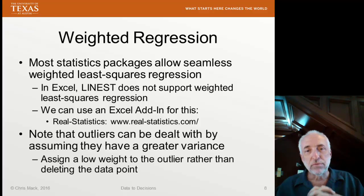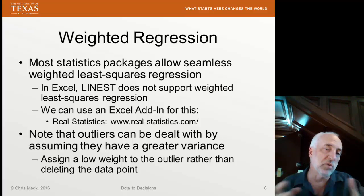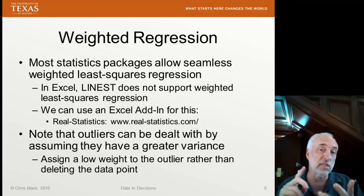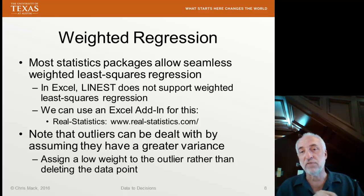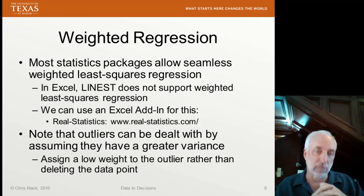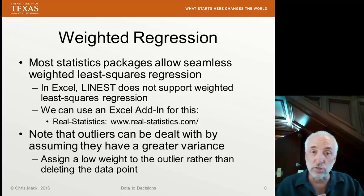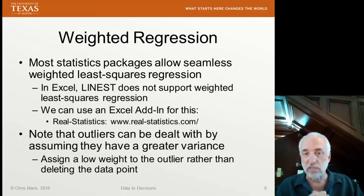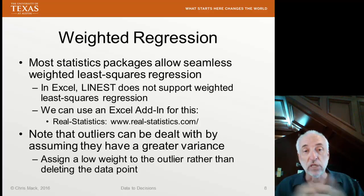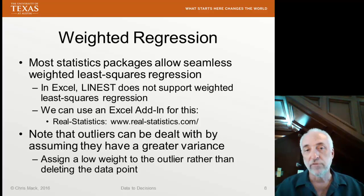This harks back to a topic from a few lectures ago on outliers. There are multiple ways to deal with outliers — removing them, Winsorizing them, using expected value, truncating — but another approach is to keep the outlier in the regression but weight it less heavily. Assume the reason it's an outlier is that the variance of that data point was larger than for all the others. If you have some way of estimating that, you can weight that outlier less heavily by using a larger estimated variance and then run weighted linear regression. This becomes another technique for dealing with outliers.